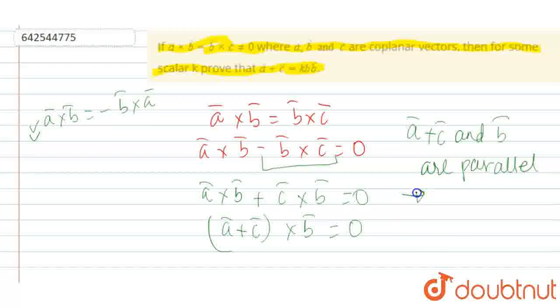By using this definition, we get a vector plus c vector is k times the second vector, that is b vector. Hence, the given result is proved.